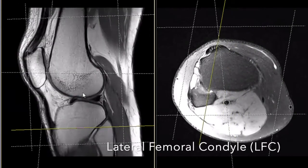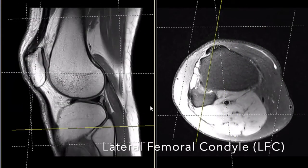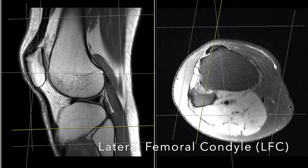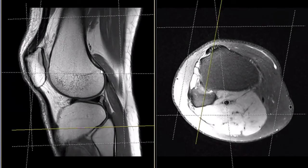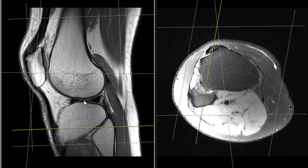The first structure we want to identify is the lateral femoral condyle. We know this is the lateral femoral condyle because we can see the fibular head, the popliteal tendon, and the lateral meniscus, all of which are lateral structures.